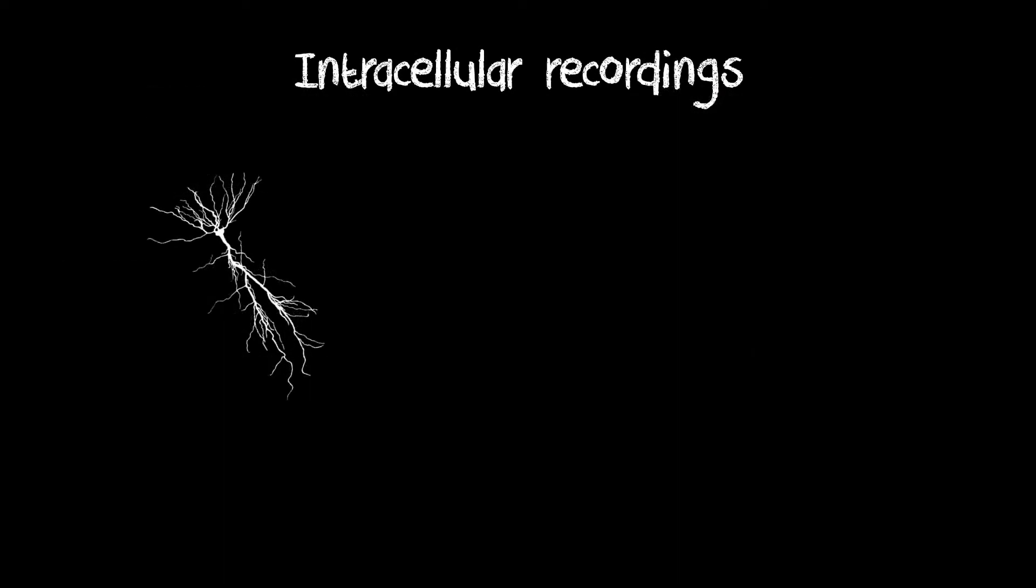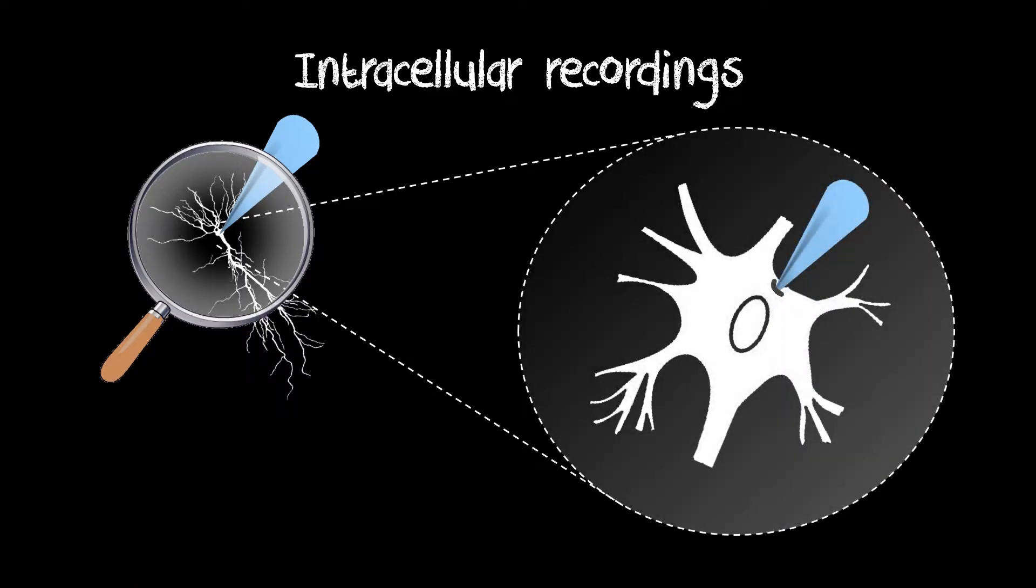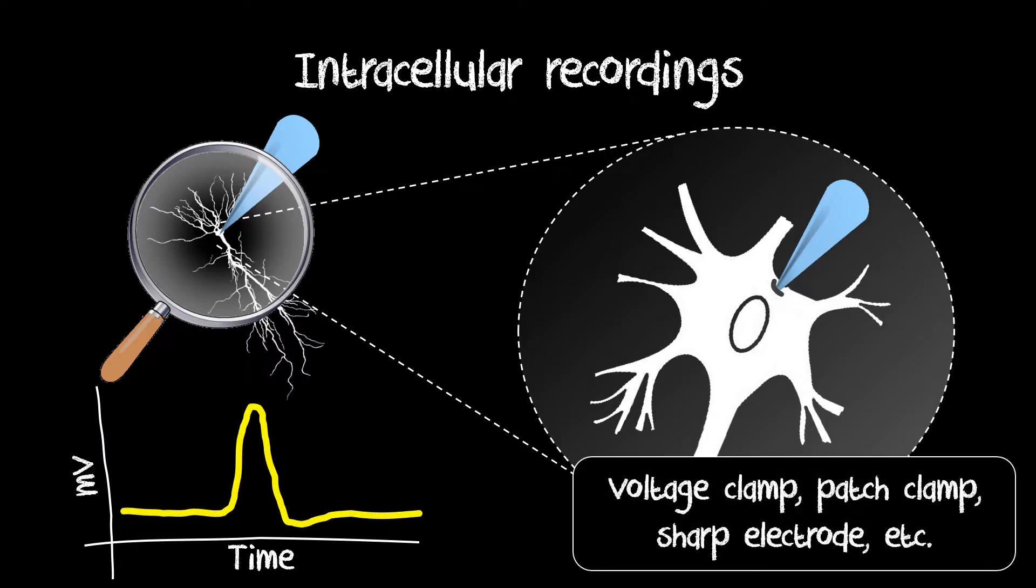During intracellular recordings, a microelectrode is inserted into the cell body or axon, and the electrochemical signals can be directly recorded. There are a variety of intracellular techniques, but they all damage the cell and are extremely sensitive to distortions. So, they don't lend themselves for research in the live and behaving animals or humans.